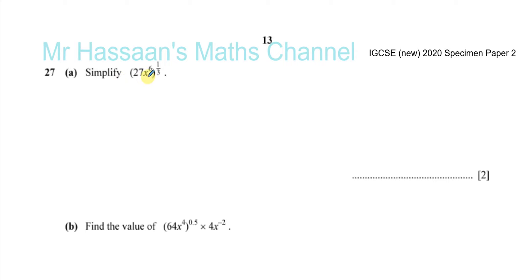It says simplify 27 x to the power of 6, all of that to the power of a third. When I deal with these type of questions, I like to deal with the numbers separately and the letters separately.